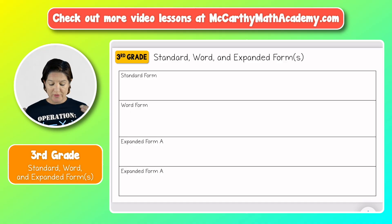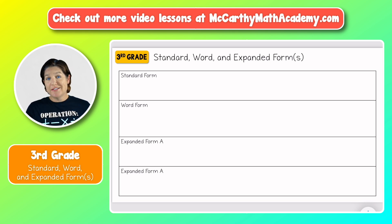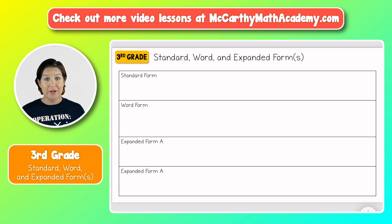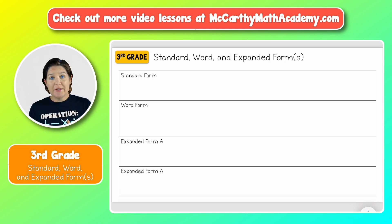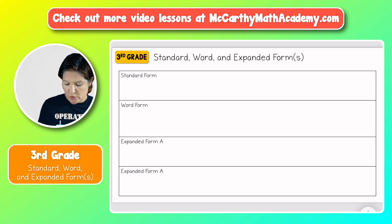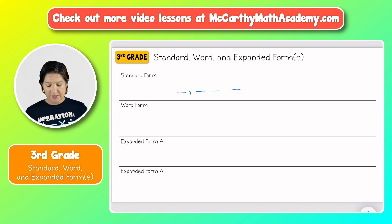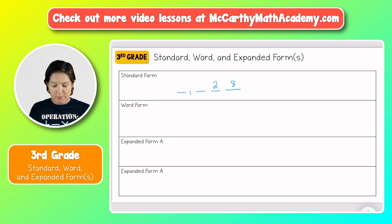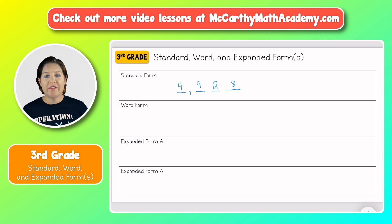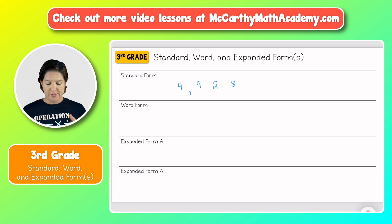All right, so let's go ahead and practice here. We've got standard form, word form, and expanded form. Standard form is the regular old-fashioned way that we write numbers — it's just the standard way to write a number. In third grade, we typically write numbers to the thousands place, so we need 1, 2, 3, 4 digits. Put an 8 in the ones place, a 2 in the tens place, a 9 in the hundreds place, and a 4 in the thousands place. So we've used the digits 4, 9, 2, and 8 to create a standard form of this number.